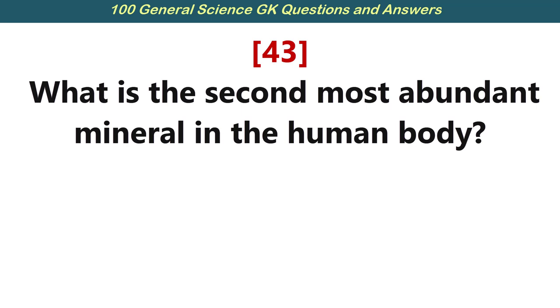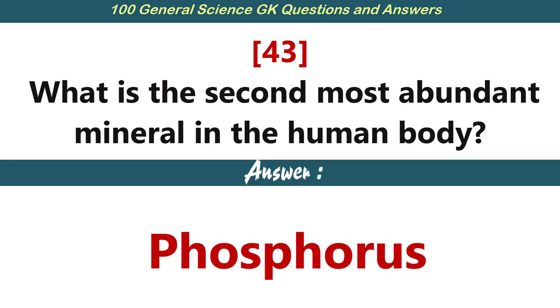What is the second most abundant material in the human body? Answer: Phosphorus.